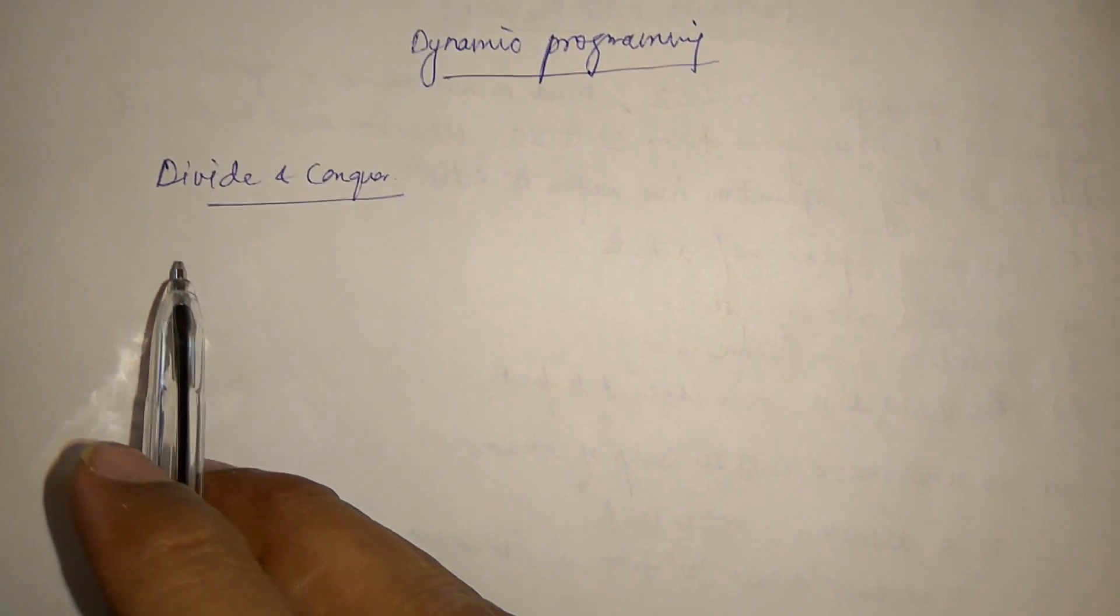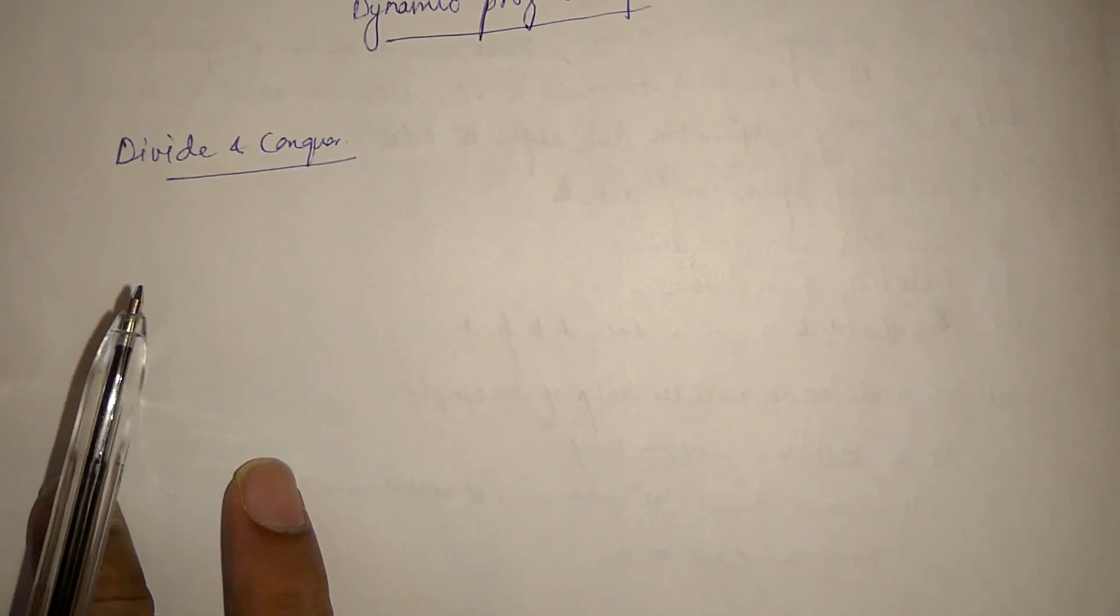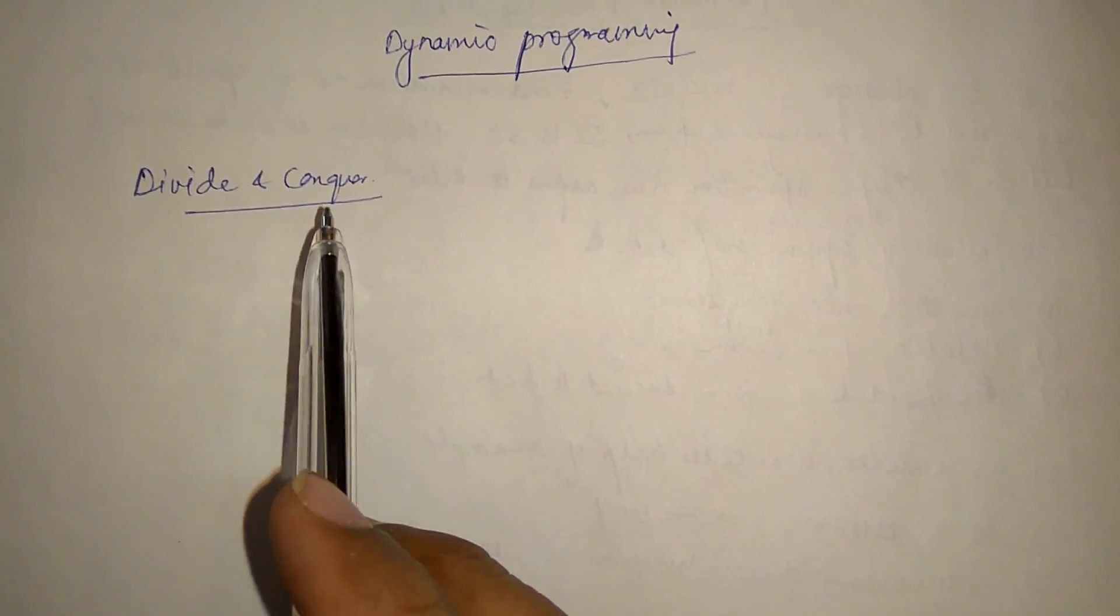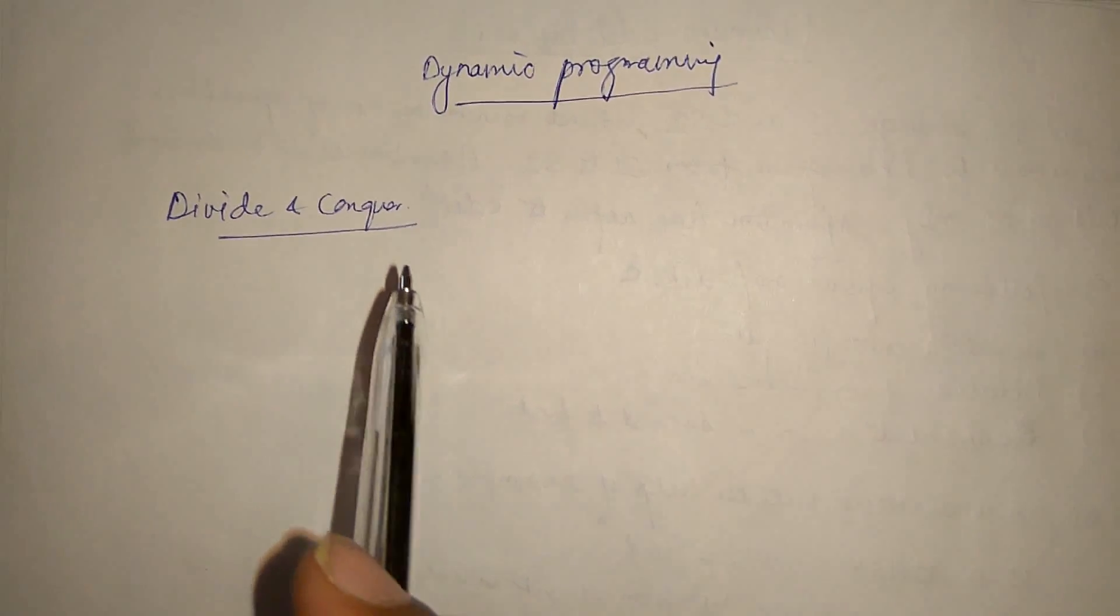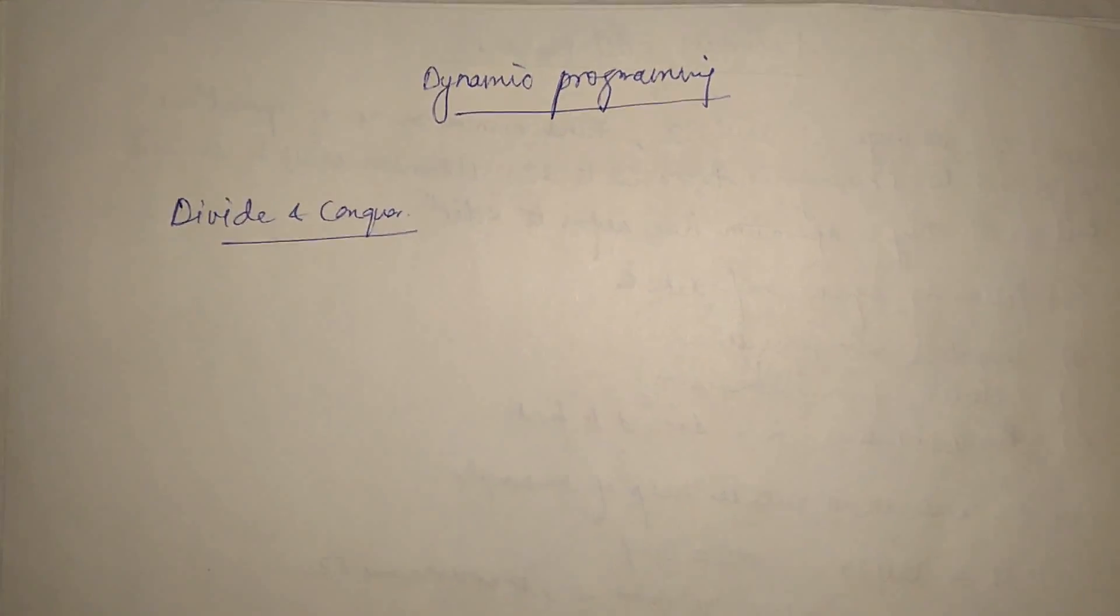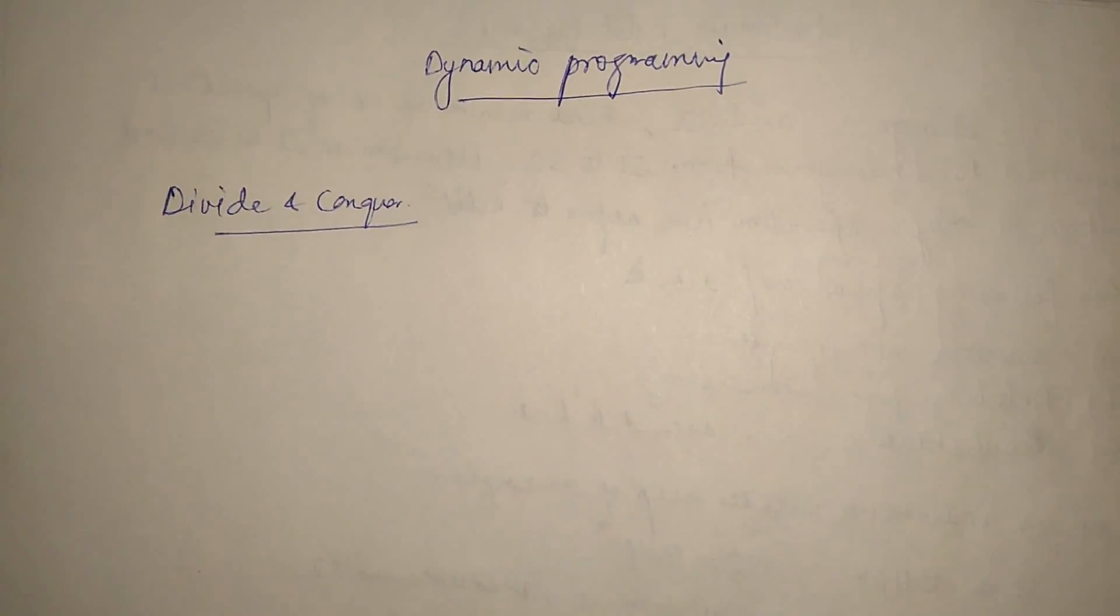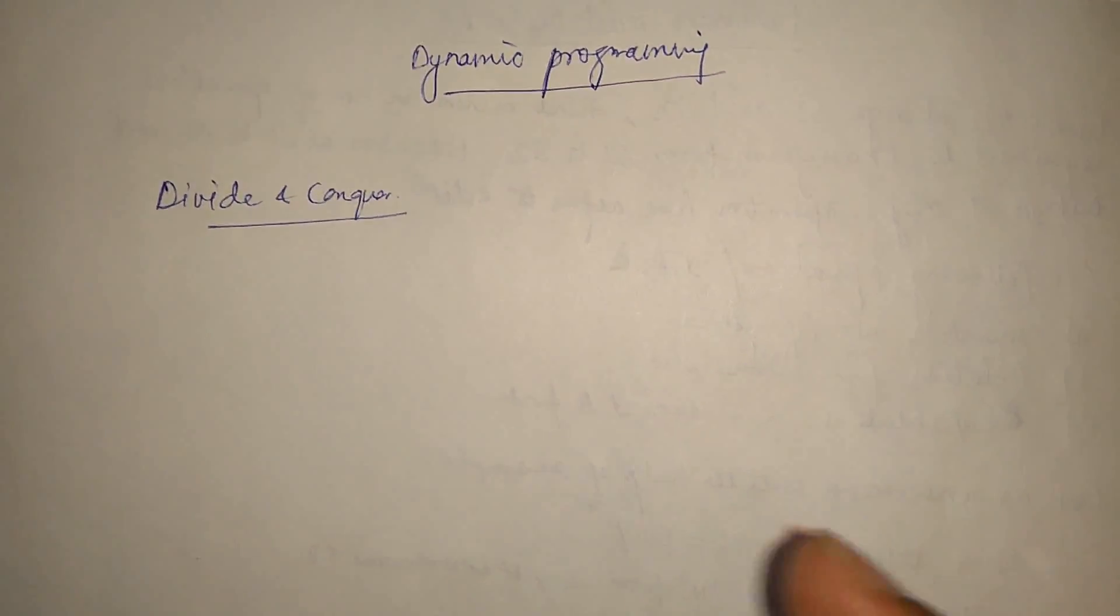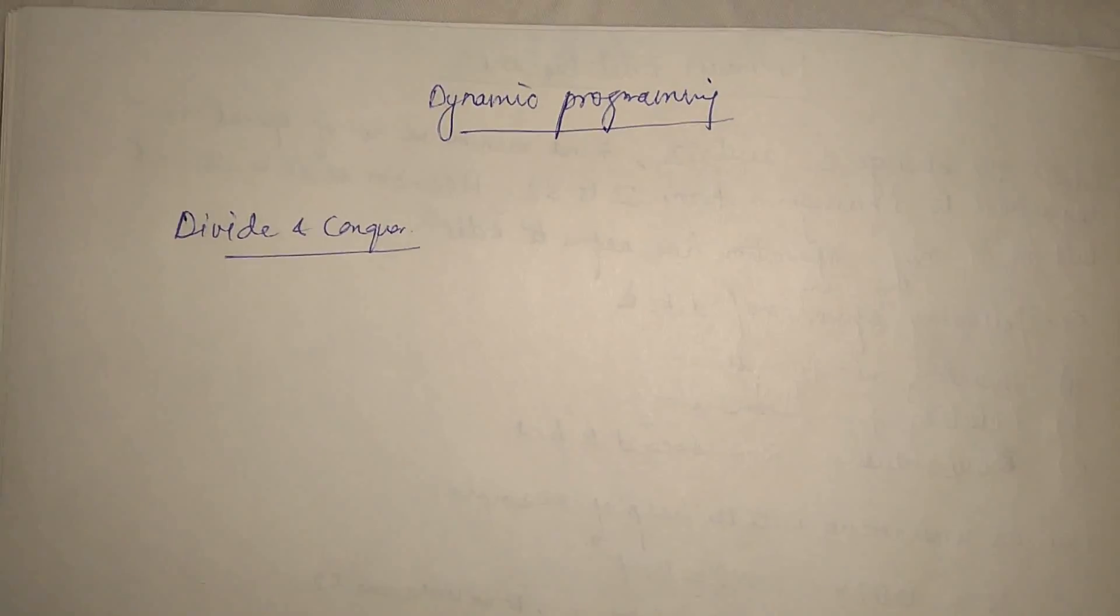So what this approach does, we divide the problems and we conquer the result of each of the divided subproblems. The basic idea is to divide the problems into smaller chunks, resolve them individually and combine the solution to get the solution of a bigger problem.